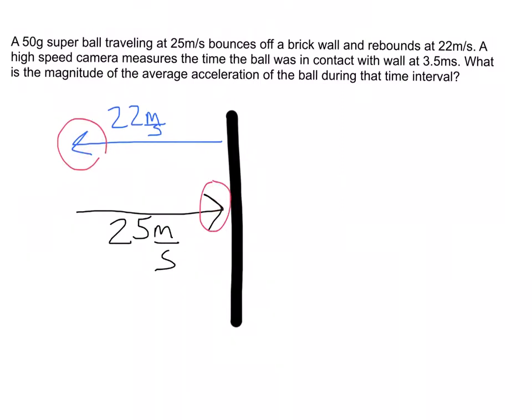We want to be very careful. In order to do that, I am going to say that this way is positive and this way is negative. We have to do that because these velocities are vectors.